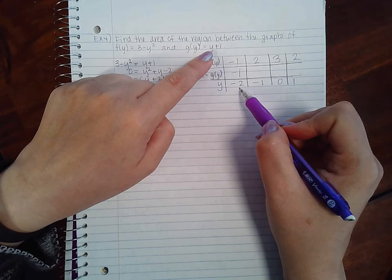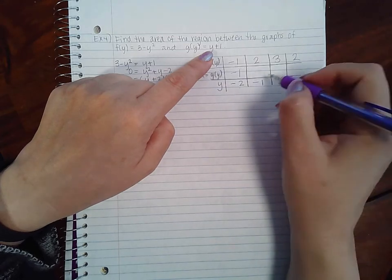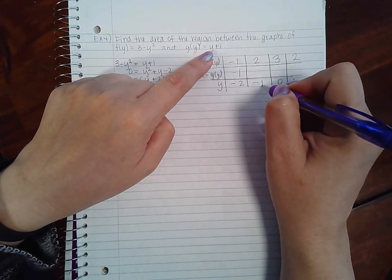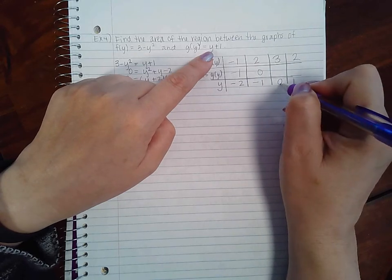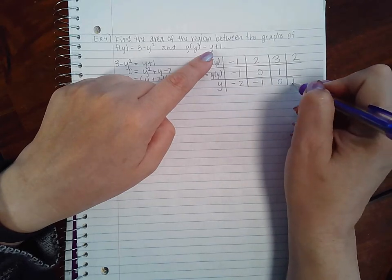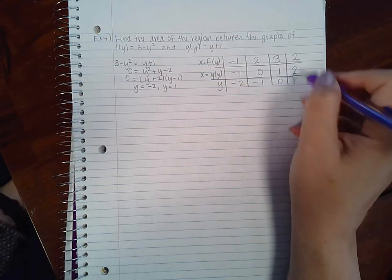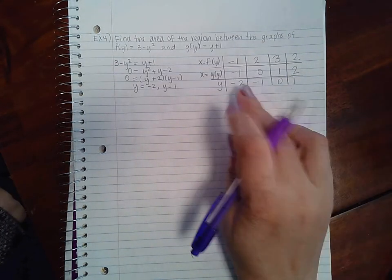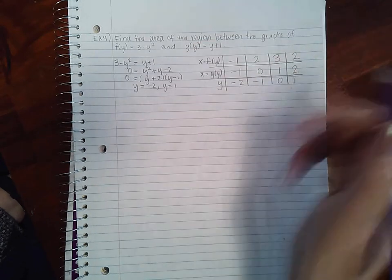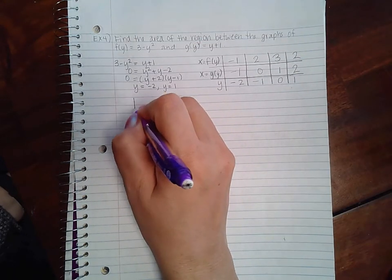Now for the other function, if I plug in -2 I get -1, which makes sense because they intersect at -2 so they should have the same x value. When I plug in -1 I get 0, when I plug in 0 I get 1, and when I plug in 1 I get 2, which again makes sense. So let's graph this and see what that looks like.